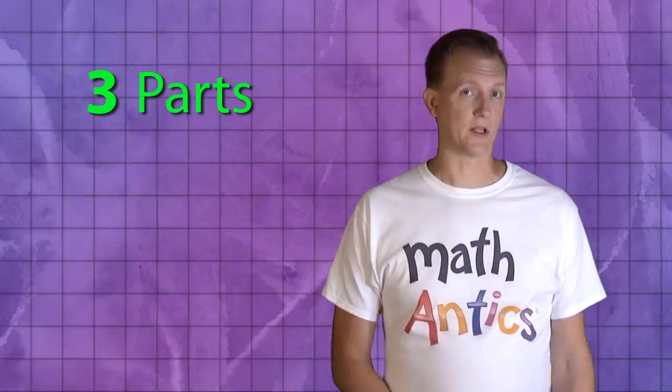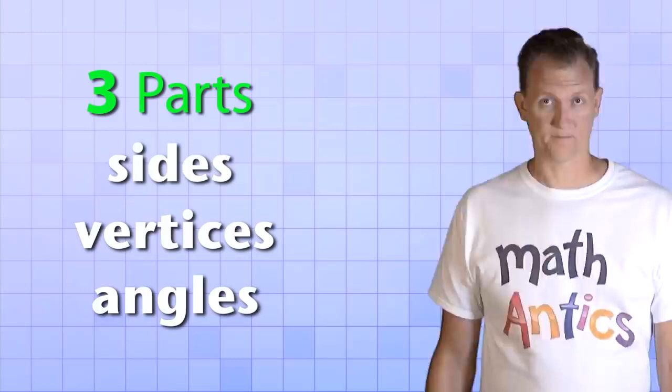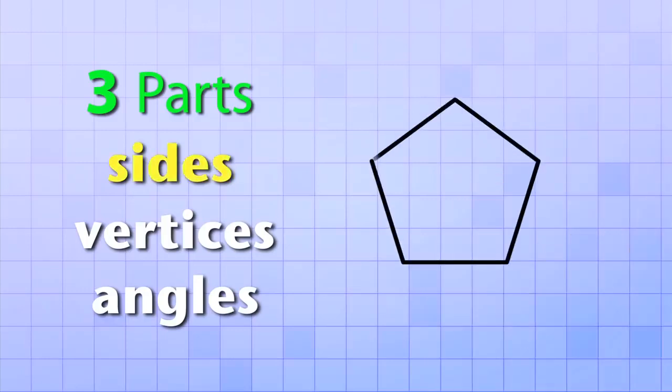First, we need to know the three parts that make up all polygons. And these parts are sides, vertices, and angles. The sides are just the straight line segments that make up a polygon. And the vertices are the points where the sides intersect. And the angles are formed by the intersecting lines. In fact, in Greek, the word polygon literally means many angles.